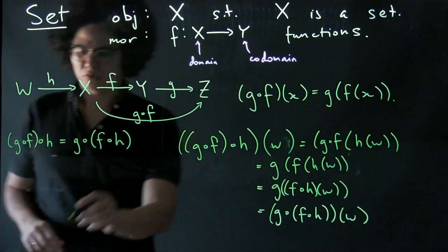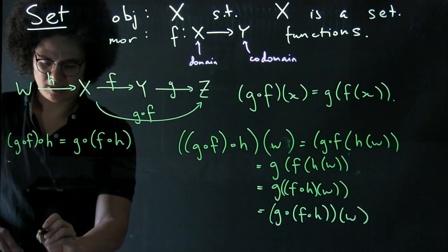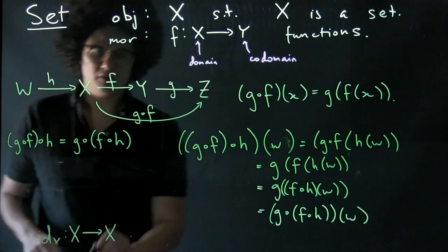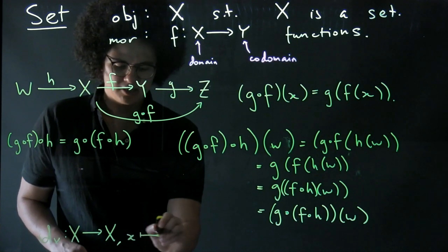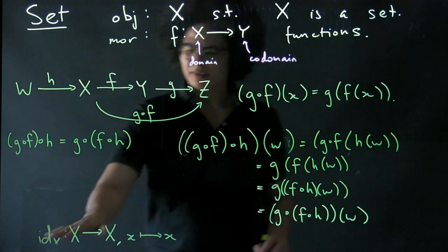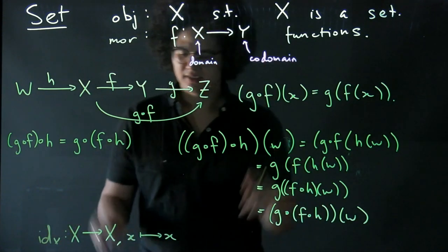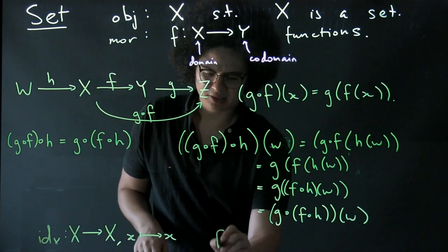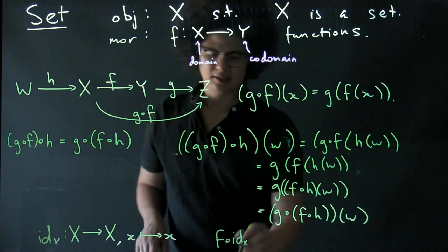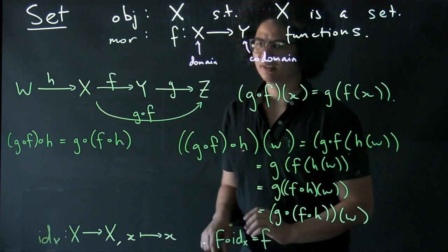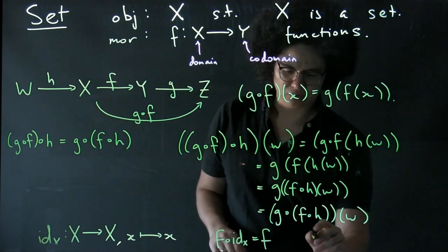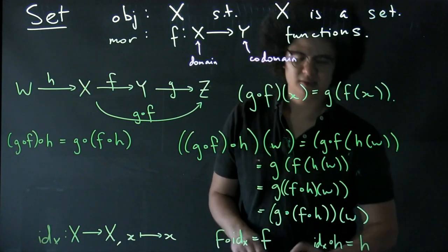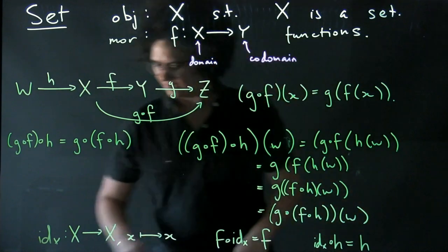And finally, note that we can define a function which I will write id_X, which is from X to itself, and it just sends any element of X back to that element of X. And this identity map acts as identity in that if I precompose F with this — F∘id_X — that's the same thing as just F. And if I postcompose with this — id_X∘H — that's the same thing as H. So that's the category of sets.